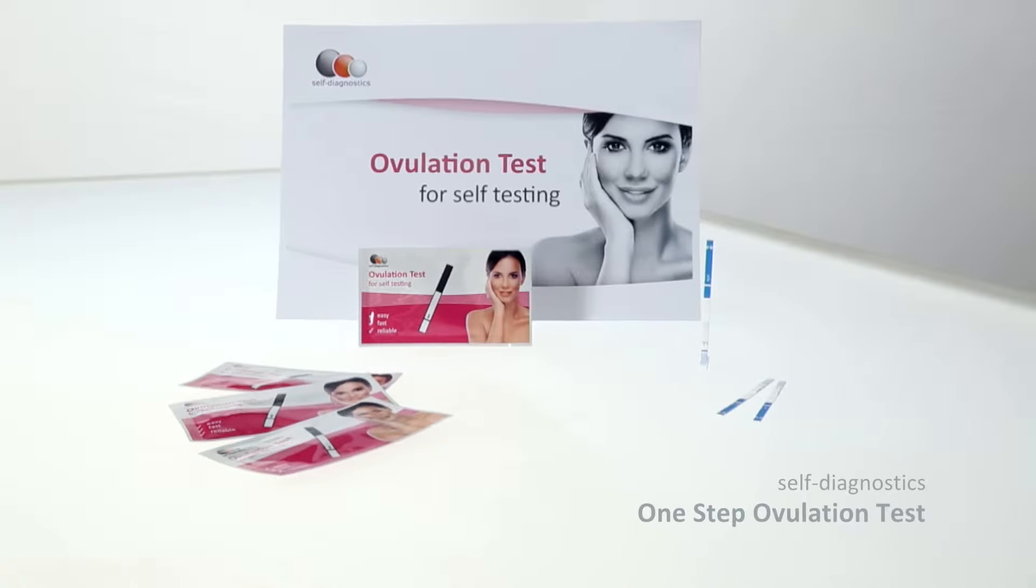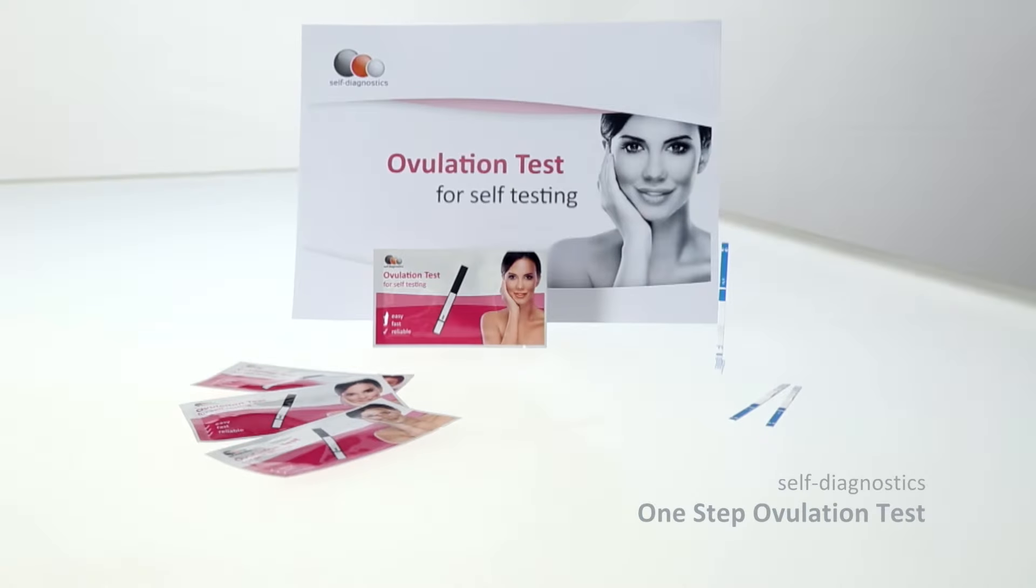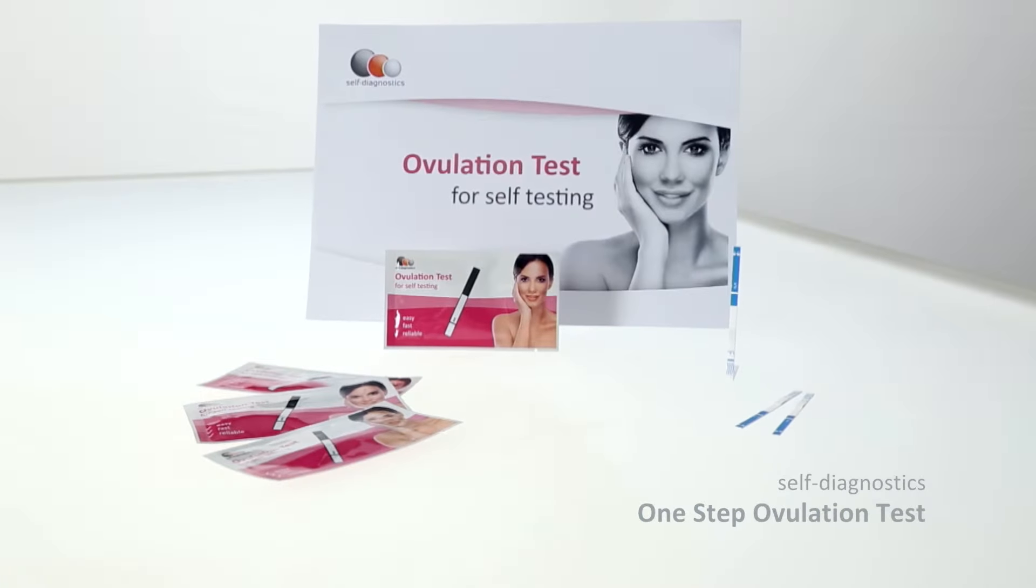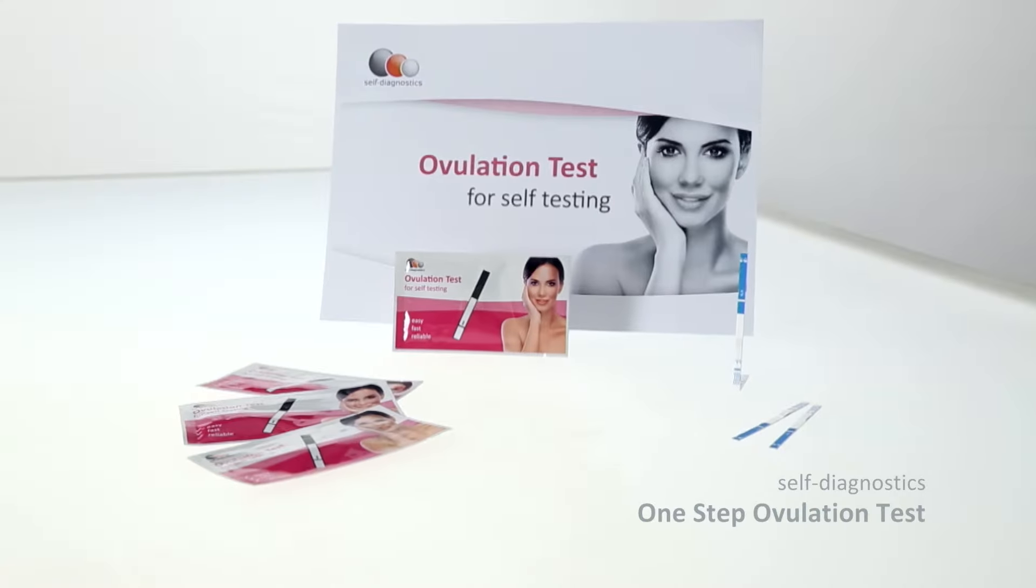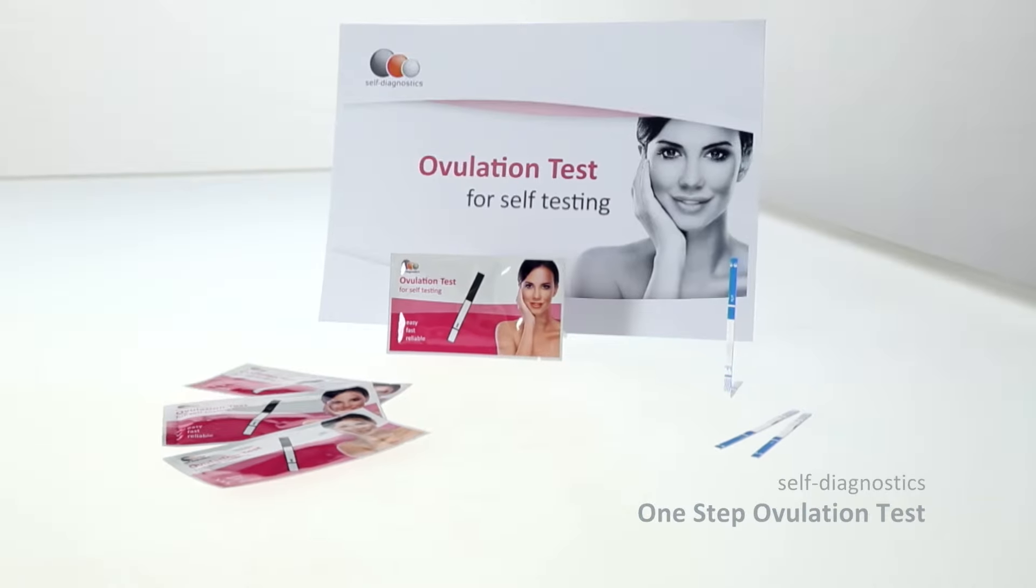The Self-Diagnostics One-Step Ovulation Test helps you determine the day you ovulate and thus the fertile days in your cycle. Because when it comes to family planning, the right timing is decisive.